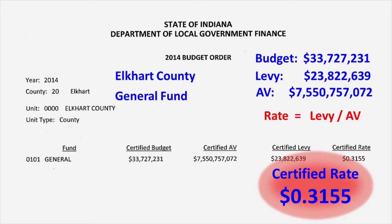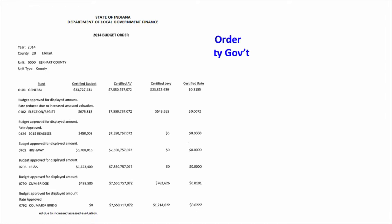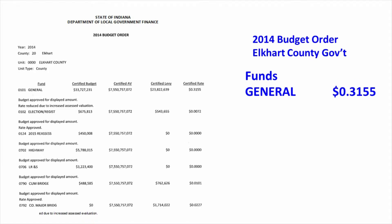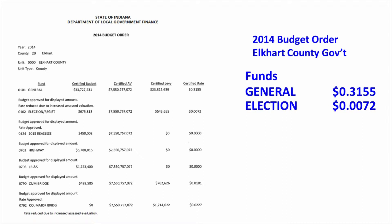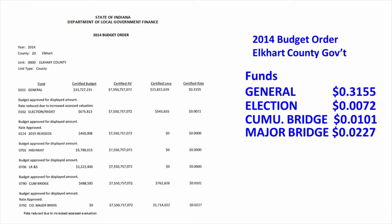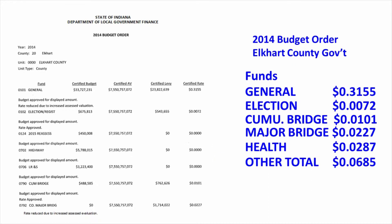But the general fund is just one of many funds that Elkhart uses. Here's the first page of Elkhart's 2014 budget order. There's an election and registration fund with a rate just under one penny per $100 assessed value, a reassessment fund, and a highway fund — but the property tax rate is zero for those funds, because the county highway fund is paid for almost entirely with motor fuel tax distributions from the state. Elkhart uses property taxes for bridges, so there's a cumulative bridge fund and a major bridge fund. Add them all up and the county property tax rate is just over 45 cents per $100 assessed value — near the middle of all county rates in Indiana.